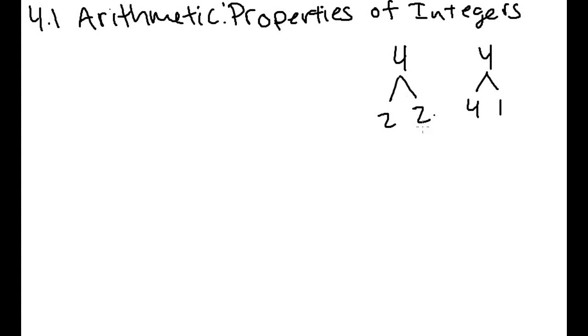This is called prime factorization. You can break every number down into a product of prime factors. So the factors of 4 are 1, 2, and 4. So 4 has 3 factors. If you take a number like 2, on the other hand, the only factors of 2 are 1 and 2.